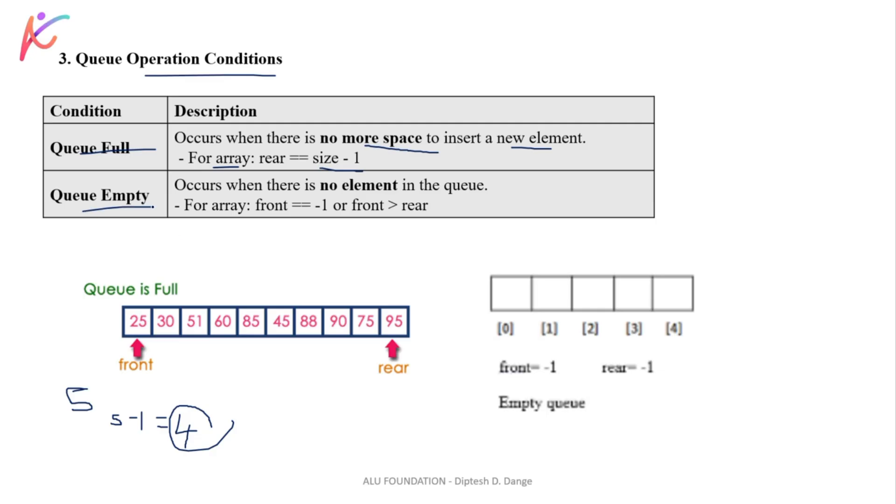Now Queue Empty. Queue Empty means what? Occurs when there is no element in a Queue, meaning that there is no element in a Queue, then we can say Queue is empty. For array, front is equal to minus 1 and front is greater than rear.